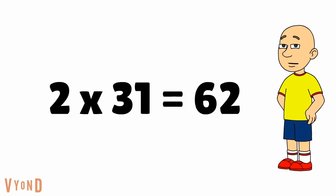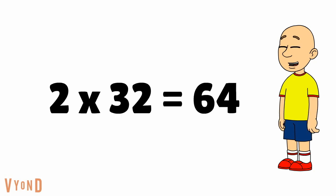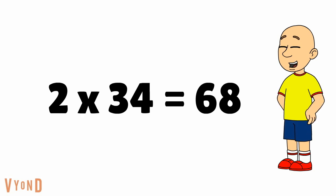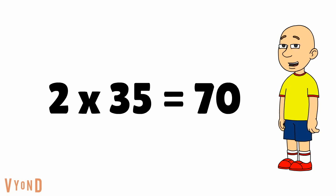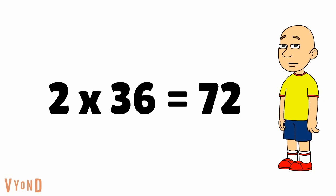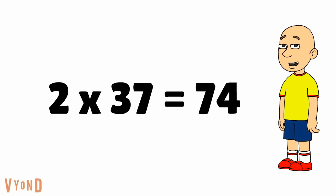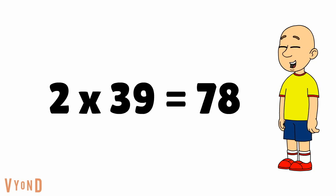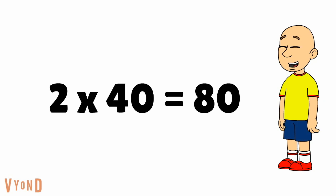2 times 31 equals 62. 2 times 32 equals 64. 2 times 33 equals 66. 2 times 34 equals 68. 2 times 35 equals 70. 2 times 36 equals 72. 2 times 37 equals 74. 2 times 38 equals 76. 2 times 39 equals 78. 2 times 40 equals 80.